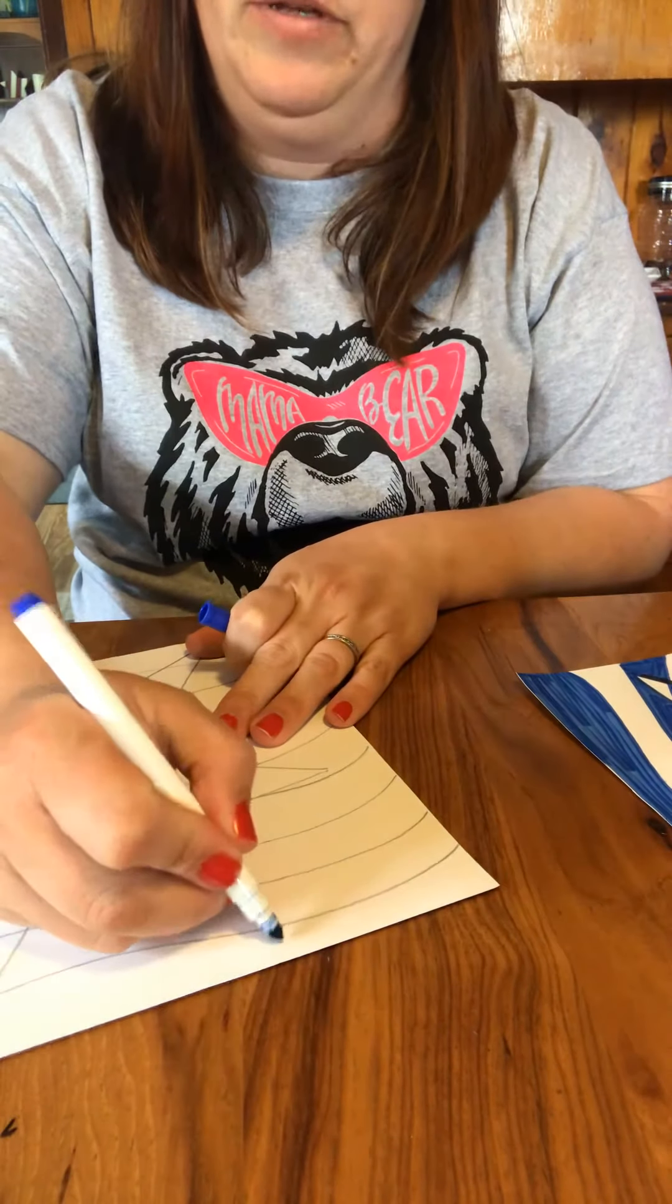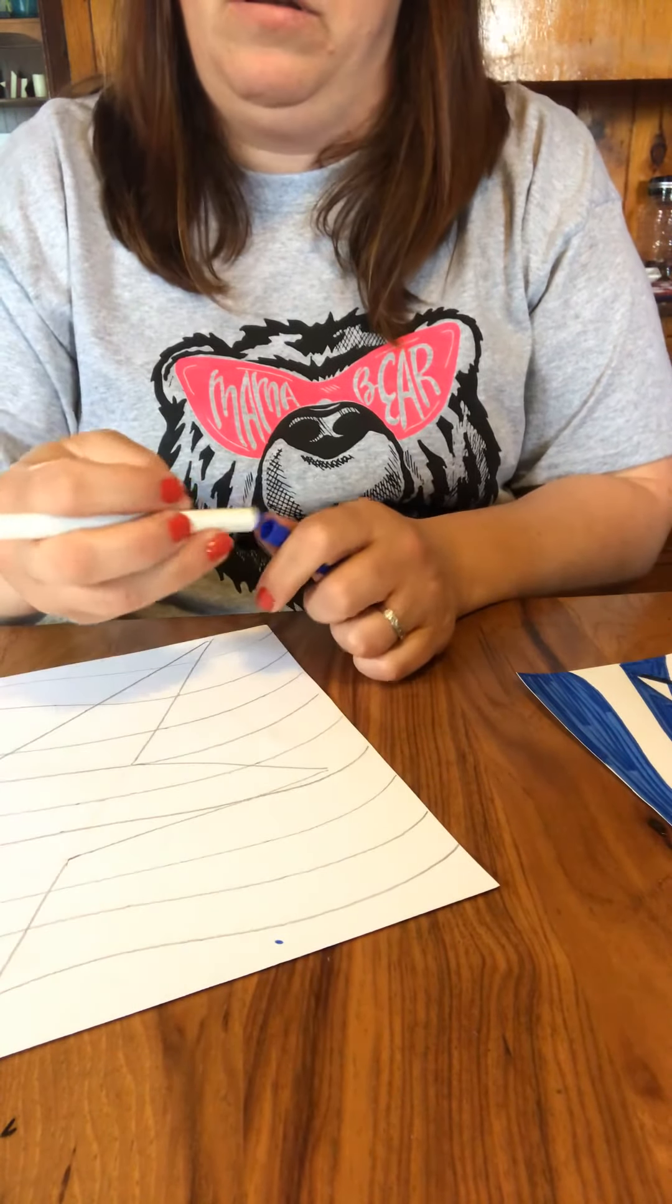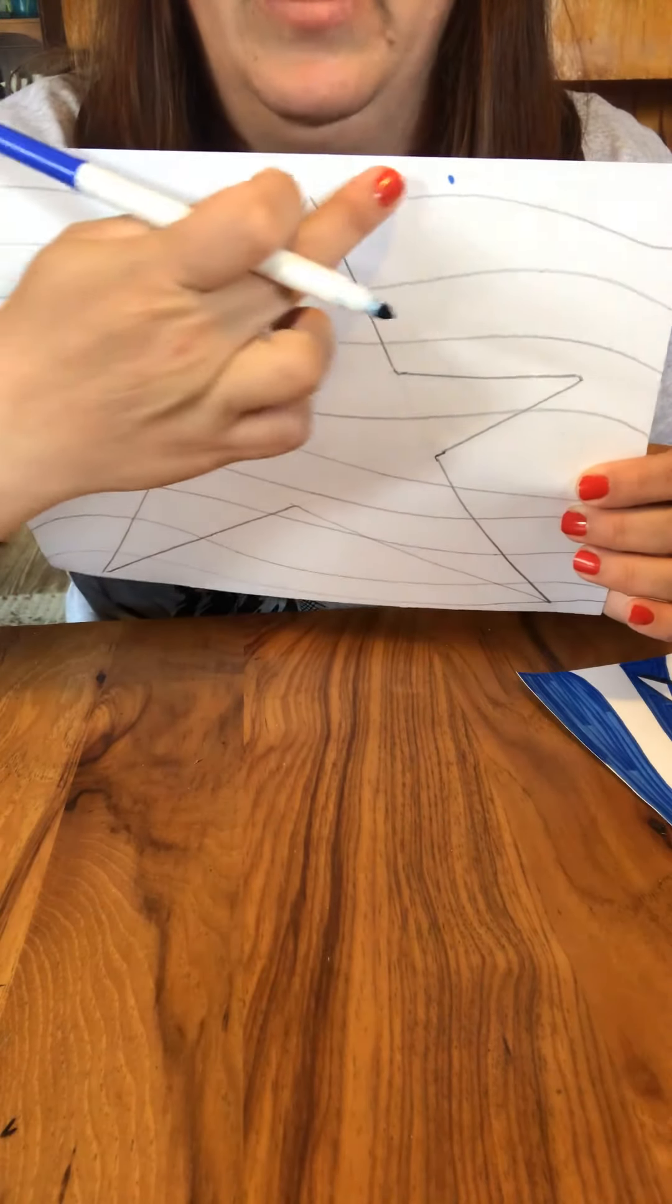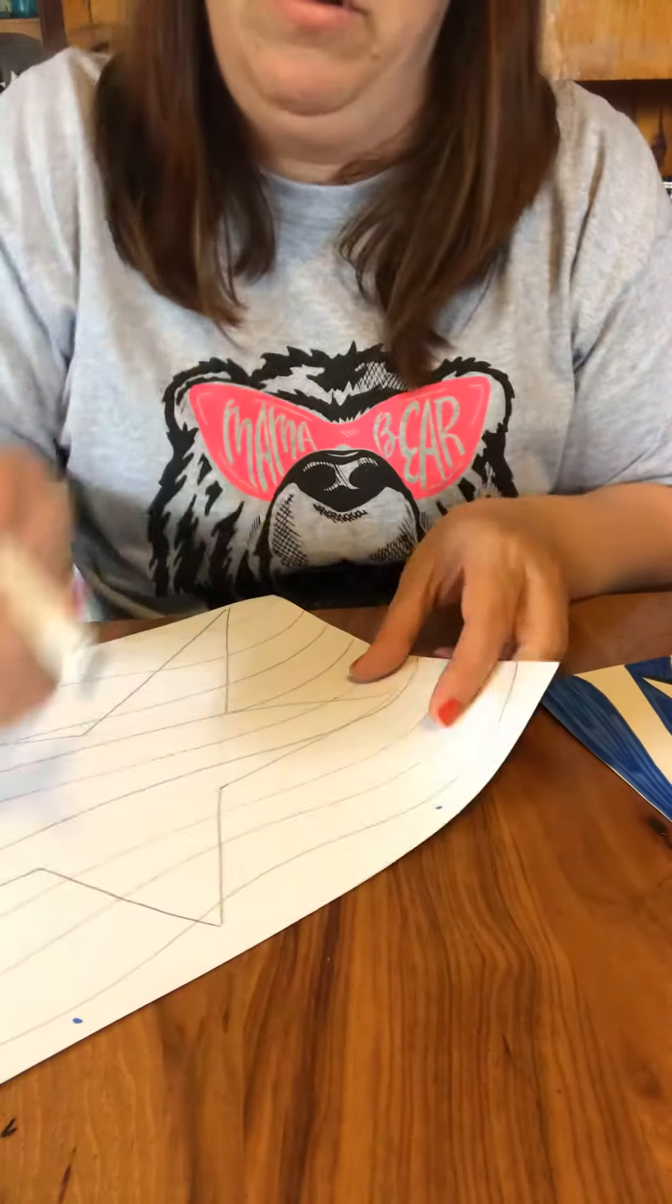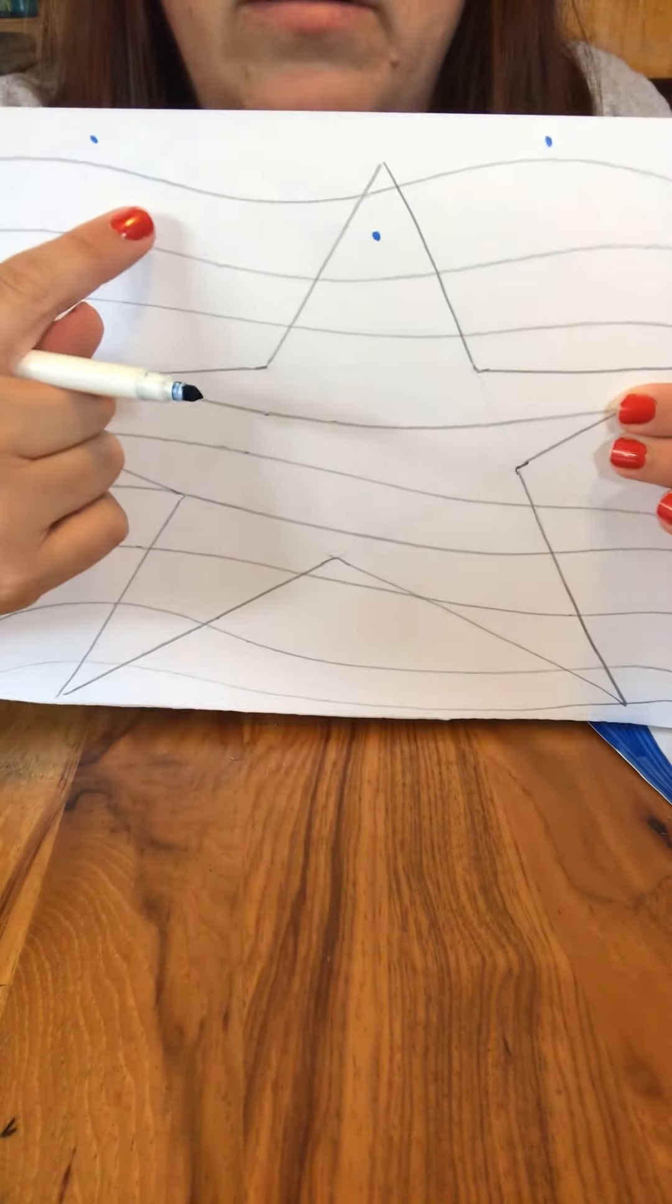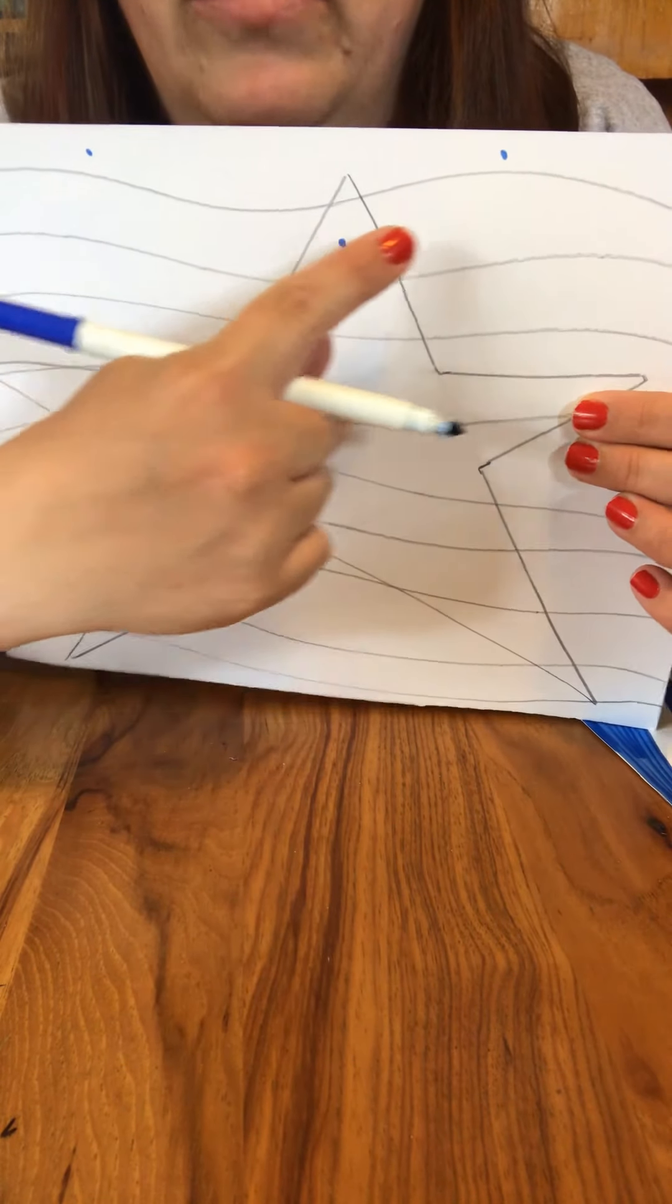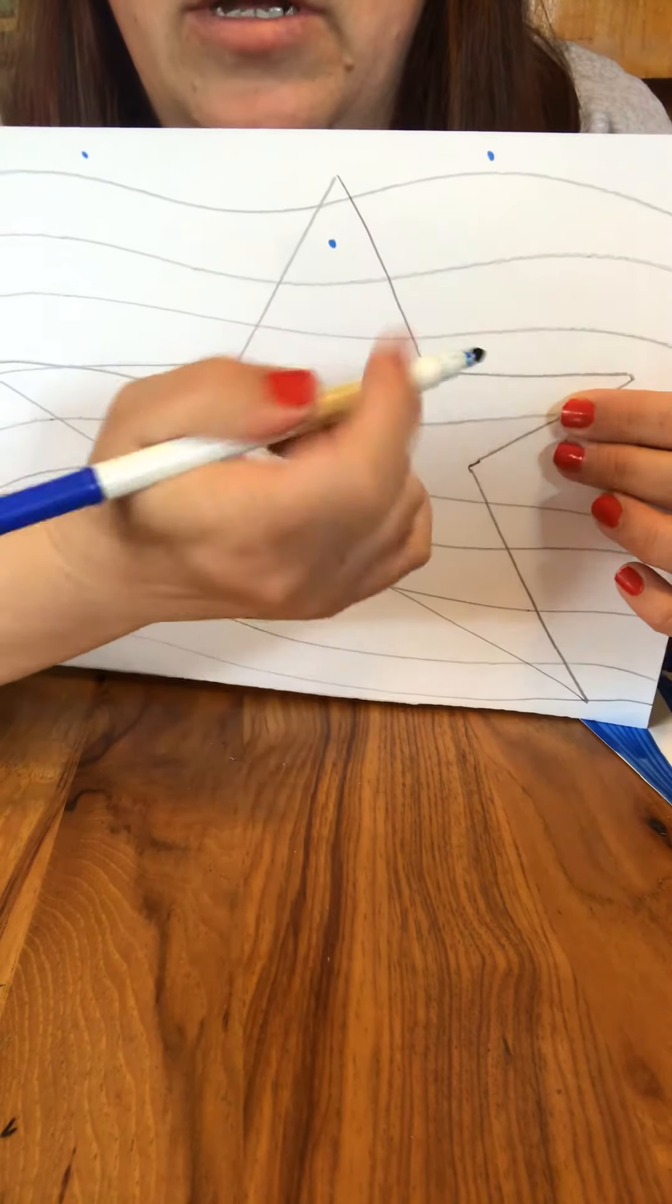So my top stripe is going to be blue. So I put two dots so I know that right in there that needs to be blue. Then I go down. This is going to be white but in the star it's blue and that will be white.